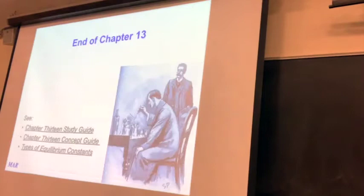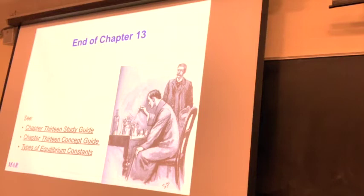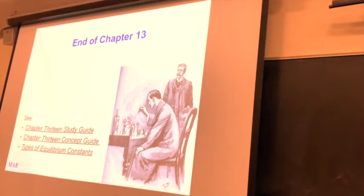That's the end of this chapter. A lot of you have seen these things before, but at the end of the chapter I have advertisements for helpful resources. In your companion you have both study guides and concept guides. A study guide is a bulleted list of the important things from the chapters. Concept guides are worked problems showing examples of how to calculate an equilibrium constant and similar problems. I'm also putting up the types of equilibrium constants handout.